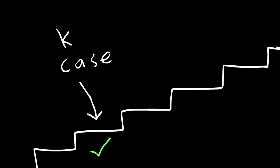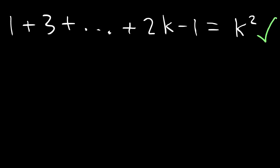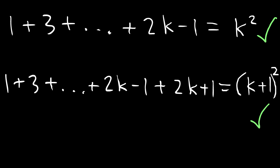Our inductive step is to assume that this holds for a generic k, which we can represent with 1 + 3 + ... + 2k - 1 = k². We then try to prove that if a generic k works, then the next term has to be true as well.